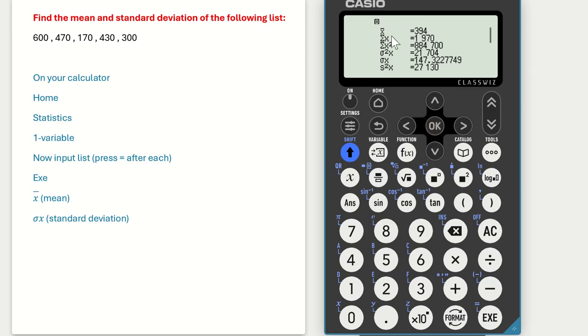The first answer here, X bar, is your mean. So the mean for this list is 394. The standard deviation is the second last one, sigma X, which is 147.3.